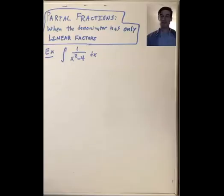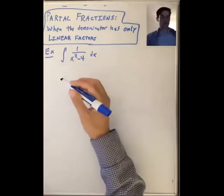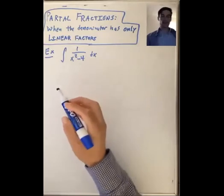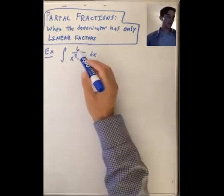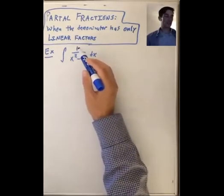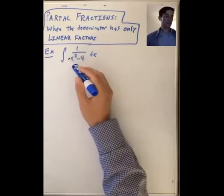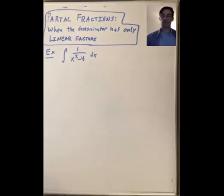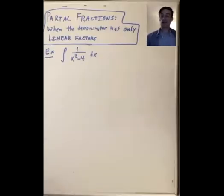In this video we'll talk about how to do the method of partial fractions when the denominator has only linear factors, and we're going to build on the examples from the last video. In the last video we saw an example where we were integrating some function 2x minus 3 divided by a function that factored as x minus 2 times x minus 3.